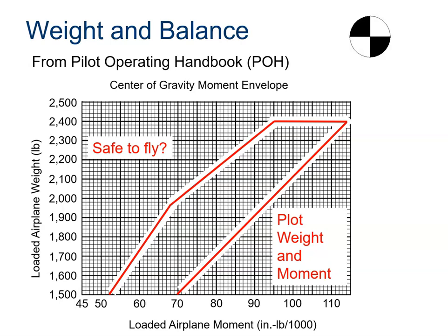There is a safe operating envelope, shown on a weight and balance chart found in the pilot's operating handbook — I believe this is for a Cessna 172. If your weight and balance calculation falls within this envelope, you're safe to fly. If the center of gravity is too far back, the aircraft will tend to pitch up, which could stall the aircraft. If it's too far forward, the nose pitches down and the pilot will constantly have to pull back on the yoke. You want it balanced — if not, you may have unsafe situations.